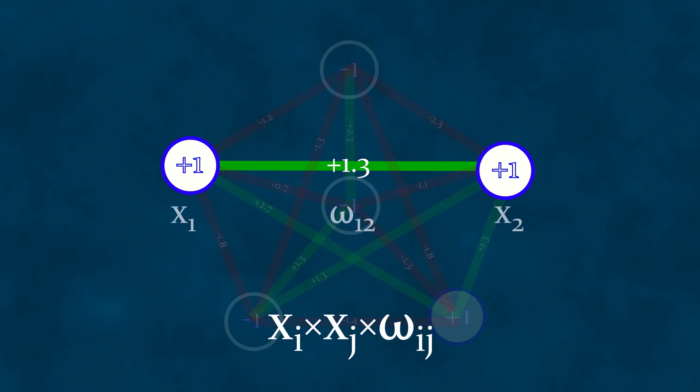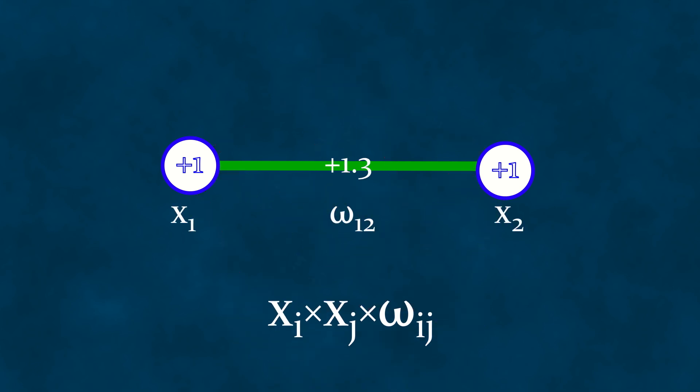The key to the neural network's function is a quantity equal to the product of the neurons' values and the weight of the synapse connecting them. For example, if both neurons are in the same state, such as one and one, or minus one and minus one, and the weight of the connection is positive, then the product will also be positive. If the weight is negative, the product will be negative.